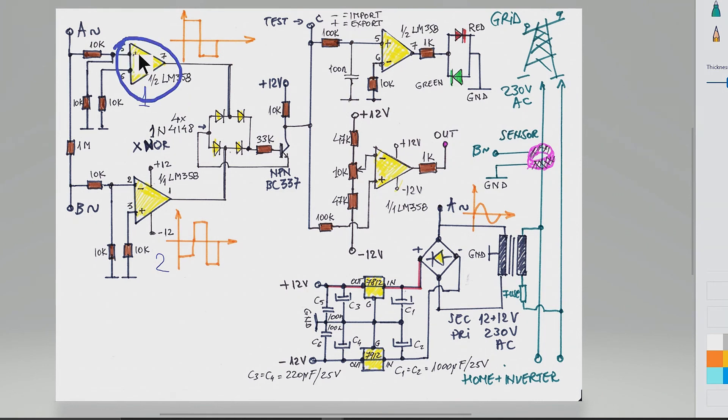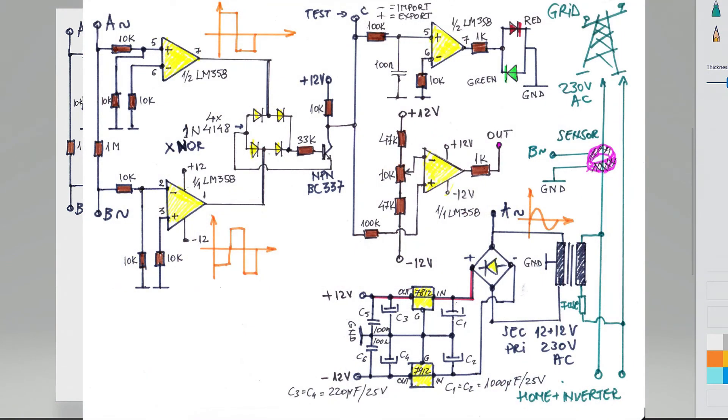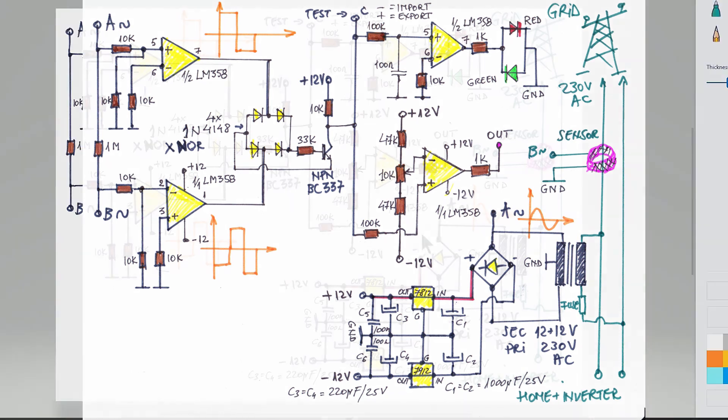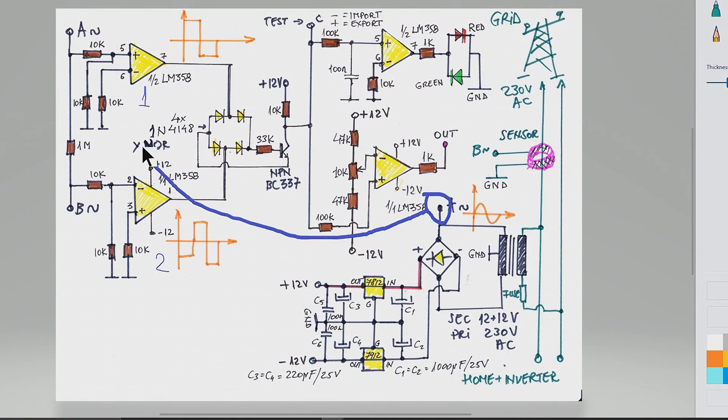Let's start with number one. We have a signal to the non-inverting, the plus input of the IC, and this one is coming straight from the transformer. We're going to have a sinusoidal signal. This will be processed by the IC and finally we have an almost square signal in the output.